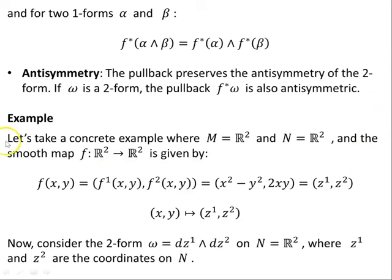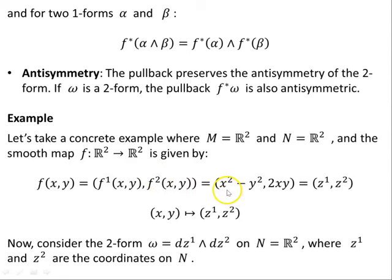Here's a concrete example — I've used these manifolds and this map before in the previous videos on the pullback of one-forms, so look for the similarities. Our manifold M is R² and N is also R², and the smooth map F: R²→R² is given by F(x,y) = (F1(x,y), F2(x,y)) = (x²−y², 2xy). These are equal to the coordinates Z1 and Z2 on the manifold N.